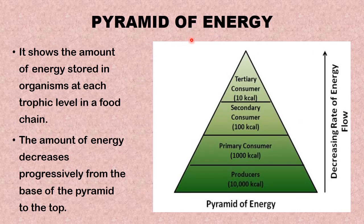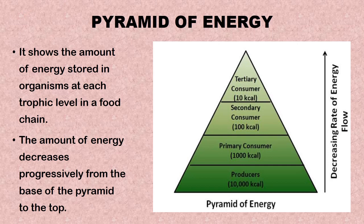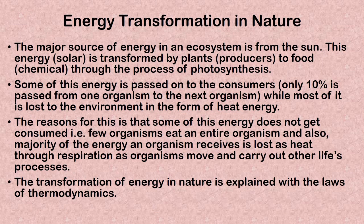Moving along, we also have the pyramid of energy. The pyramid of energy is the best diagrammatic description of the food chain. It shows the amount of energy stored in organisms at each trophic level in a food chain. The amount of energy decreases progressively from the base of the pyramid to the top. You can see that the energy transmitted from one trophic level to the other decreases as you move from the producer to the tertiary consumer.